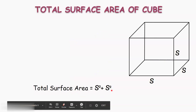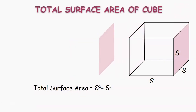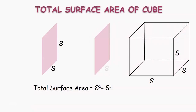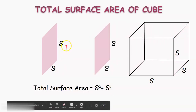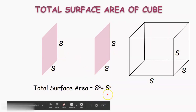Now, let us consider the two side faces, whose dimensions are also S each. The area of each face is again S into S, which is S square. By adding these areas to the previous areas, we get S square plus S square plus S square.